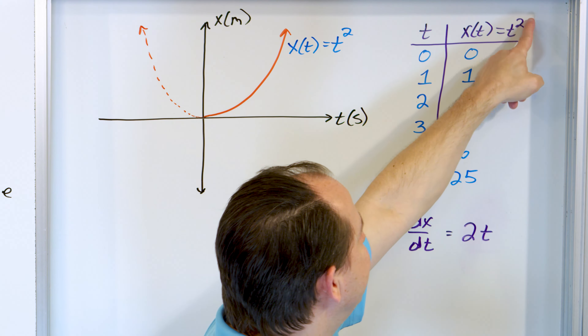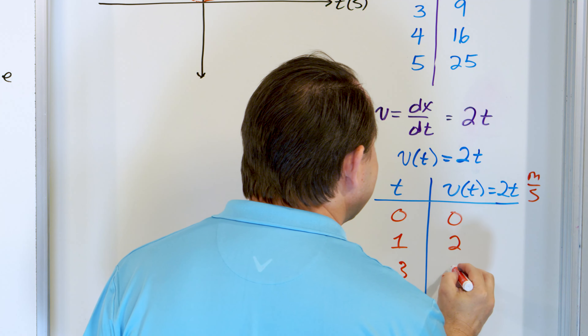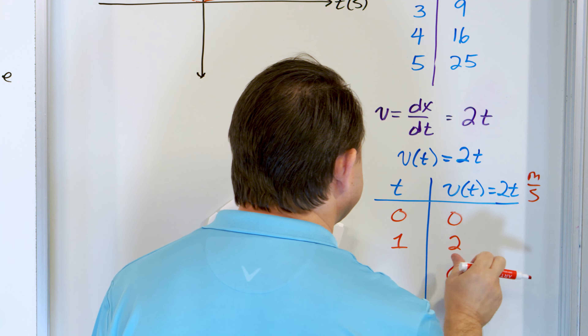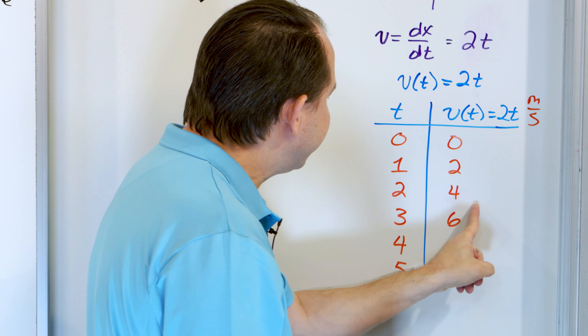We can build a table of velocities using v equals 2t. At t equals 0, velocity is 0 meters per second. At 1 second, 2 times 1 is 2 meters per second. At 2 seconds, 2 times 2 is 4 meters per second. At 3 seconds, 6 meters per second. At 4 seconds, 8 meters per second. At 5 seconds, 10 meters per second. The speed is increasing the whole time — this thing is speeding up to a maximum of 10 meters per second at t equals 5 seconds.